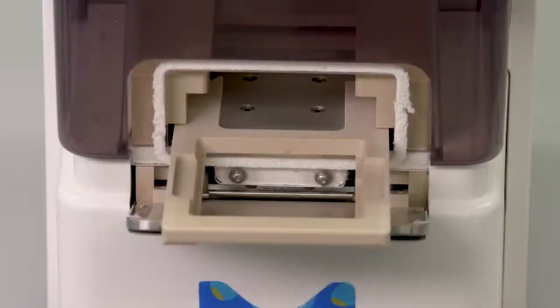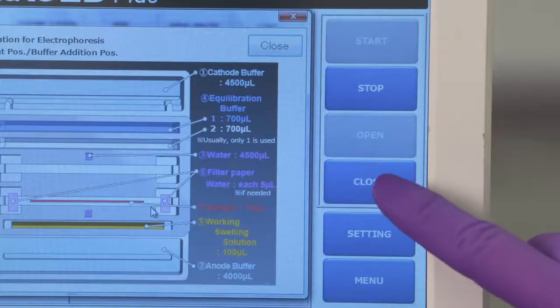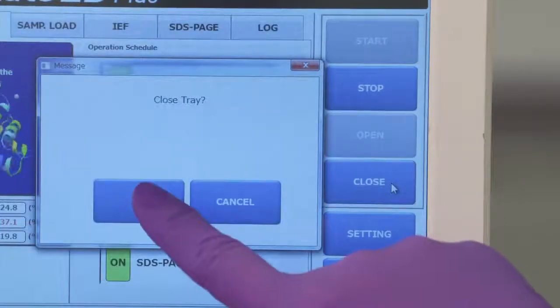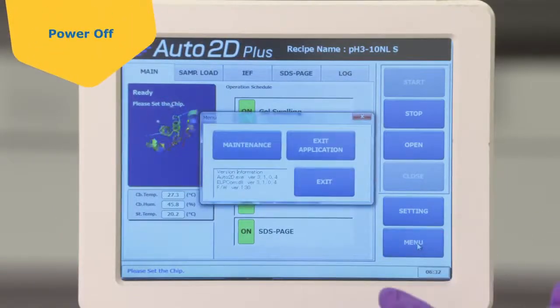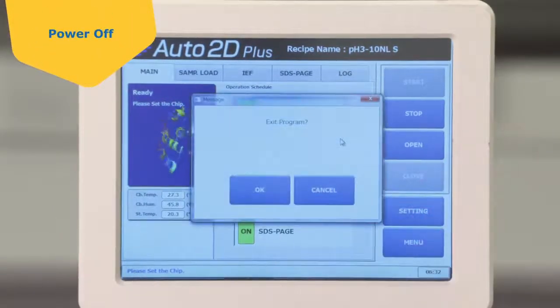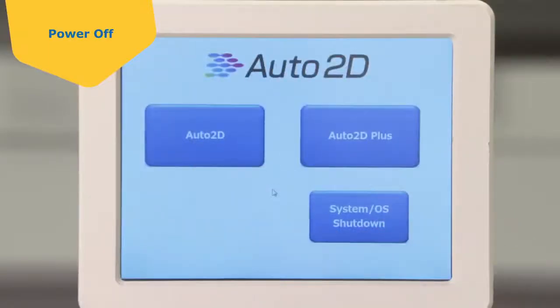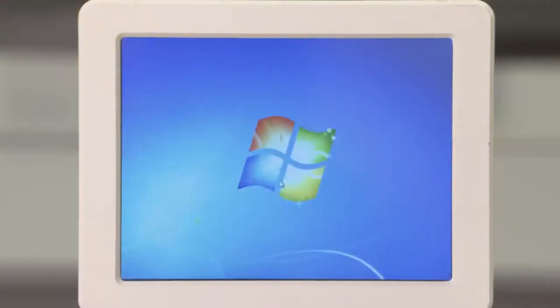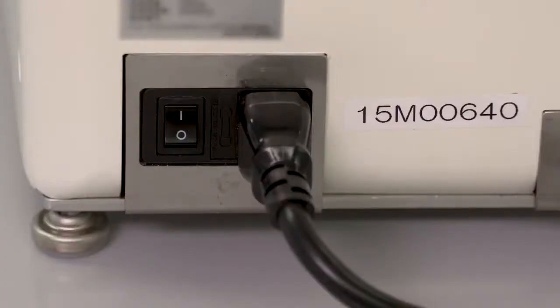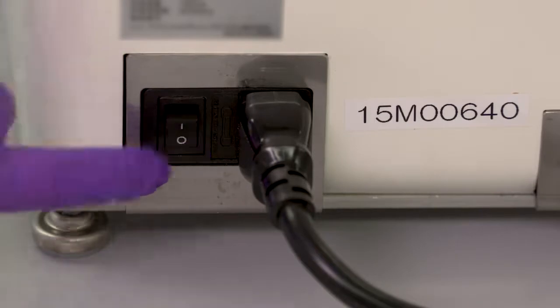Once there is no longer condensation within the electrophoresis chamber, close the tray by touching close. Touch the menu button on the screen, followed by exit application to return to the launch screen. Then touch shut down to shut down the operating system. After the computer is shut down, turn off the power switch on the back of the device.